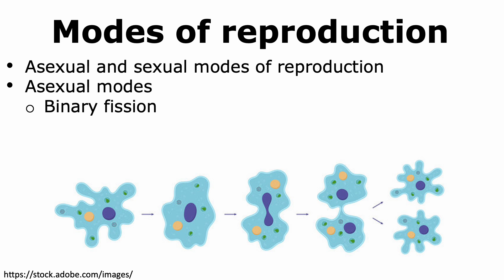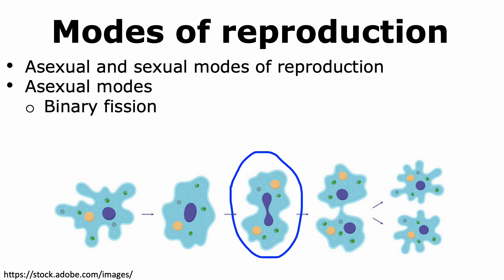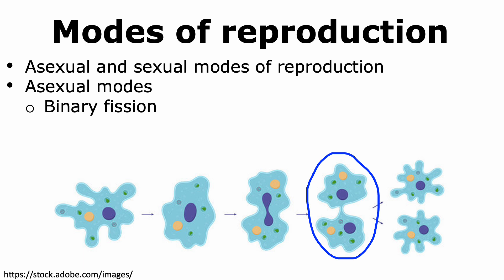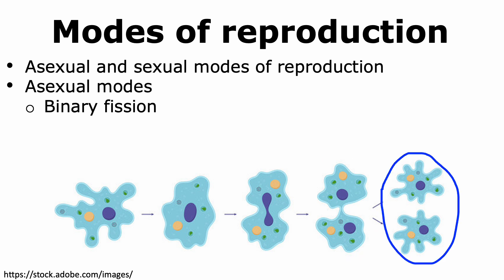Protists can show different modes of reproduction — they show both asexual and sexual modes. One common asexual mode of reproduction observed in protists is binary fission, which is also observed in prokaryotes. In binary fission, a parent cell is able to duplicate its DNA content, and the cell then undergoes division by forming a septum. This results in two independent daughter cells that are genetically identical to the parent cell.